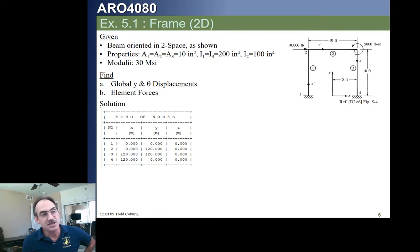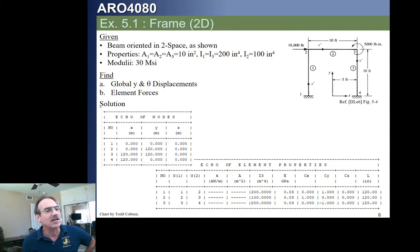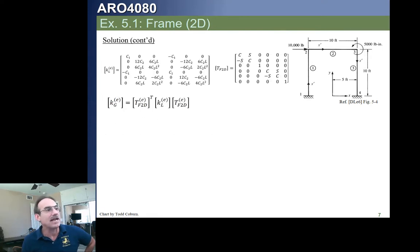The node coordinates are given in feet, so we need to convert to inches to have consistent units. Element 1 runs from node 1 to 2, element 2 from node 2 to 3, and element 3 from node 3 to 4. We don't have separate stiffness or area information for each element — we just have I and E. There appears to be an error in the code: it's outputting the wrong units and the area is showing as zero. I'll need to look at the code to see why those didn't output correctly. The direction cosines and length for each element are also listed here.